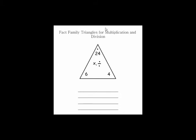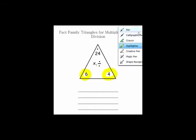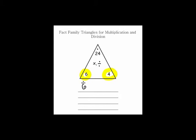Fact family triangles for multiplication and division. If you look, we have our two factors at the very bottom. So our factors are 6 times 4 and 4 times 6. The two bottom numbers we are multiplying together to get the product, the top number of your triangle by the dot, 24. This shows my turnaround rule for multiplication. I can switch 6 and 4 around and I'm still going to get 24.